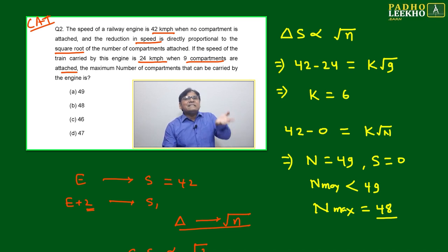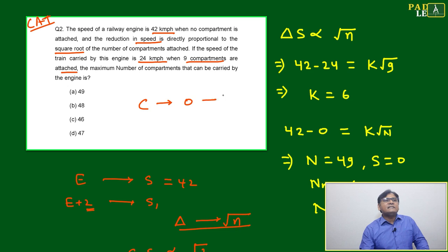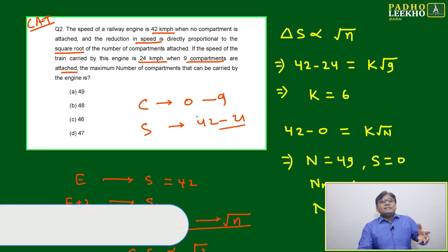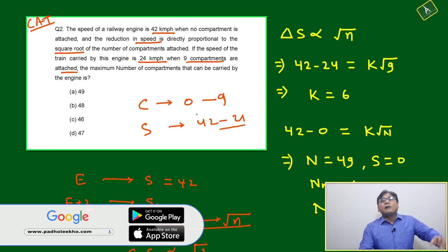The number of compartments has increased from 0 to 9, so compartments increased 0 to 9, and the speed decreased from 42 to 24. Then what is the capacity of this train to carry compartments? How many compartments?